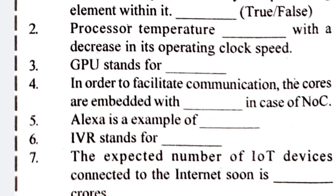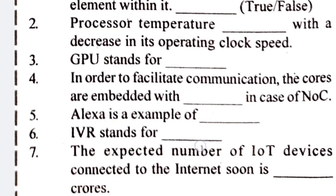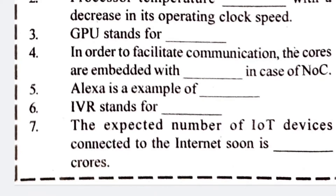Number two: processor temperature decreases with a decrease in its operating clock speed — when clock speed is decreased, temperature will also decrease. Number three: GPU stands for Graphical Processing Unit.